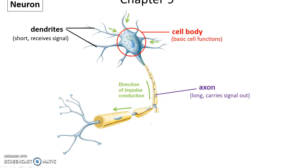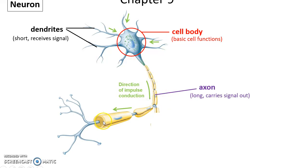The neuron has a cell body, a large area where you'll find the nucleus and all the main metabolic organelles you expect of any cell. Also coming off of it are small processes called dendrites. Dendrites receive signals and transmit them toward the cell body and then to the axon. The axon is a very long process that carries the signal out to the next cell, which could be another neuron or an effector.